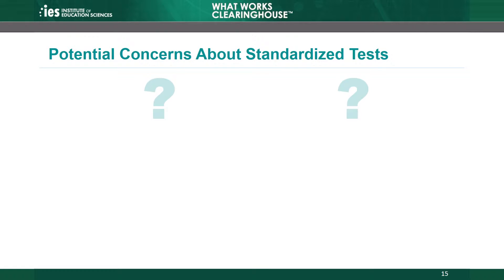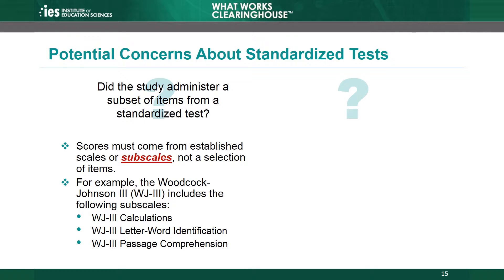There are a few other things to bear in mind when deciding whether or not an outcome measure is standardized. First, the measure used in the study must be an established scale or subscale, not just a researcher's selection of items from the test. For example, the developer of the Woodcock-Johnson III assessment has identified several subscales, including the WJ3 Calculations, WJ3 Letter-Word Identification, and WJ3 Passage Comprehension subscales. If the study uses the WJ3 assessment, it needs to use the assessment in its entirety or use one or more of the subscales in their entirety. Validity and reliability have been established for the full assessment and the subscales, but not for a portion of items in one or more of the subscales selected by a researcher. It is also acceptable to combine two established subscales, as long as the study uses both subscales in their entirety.